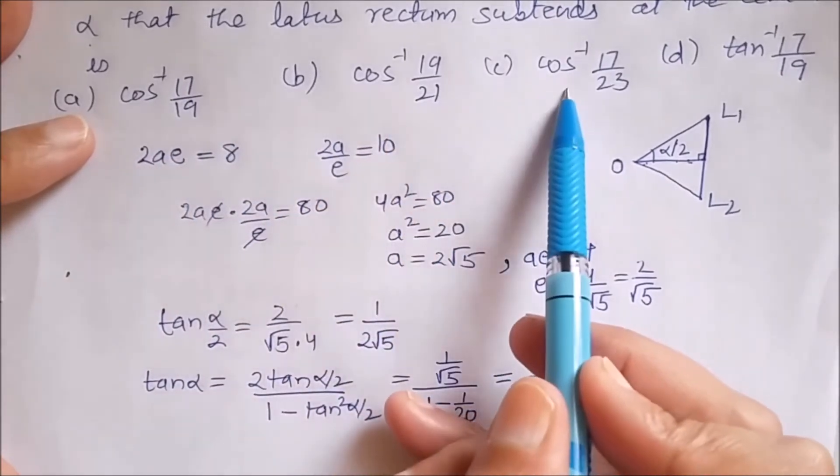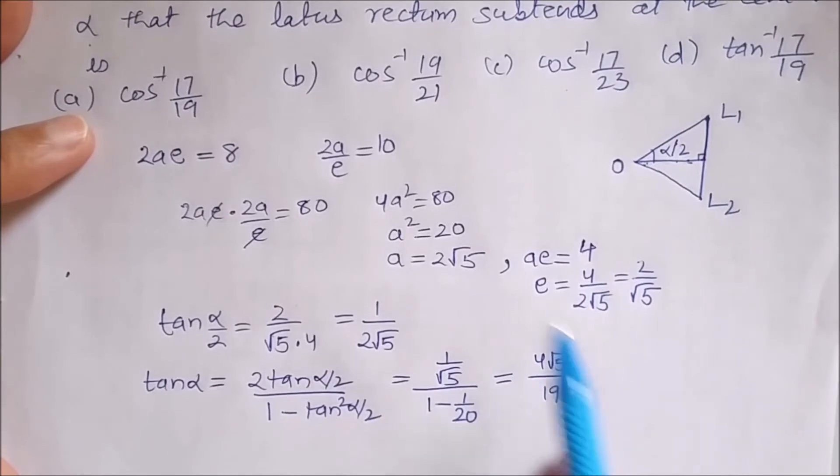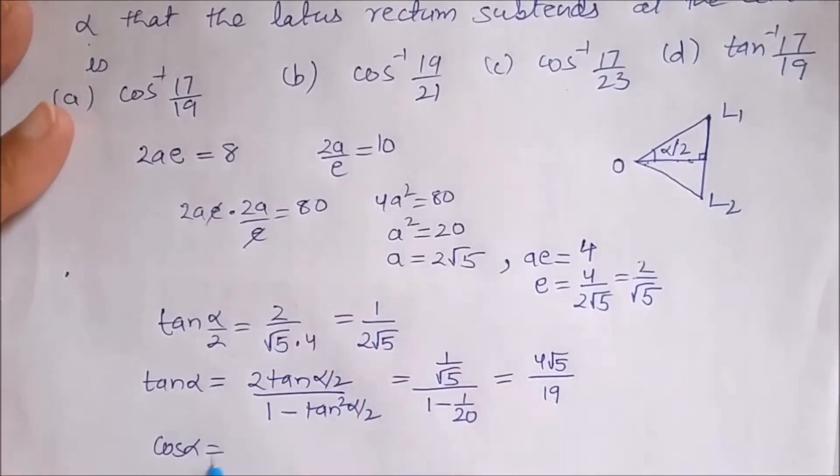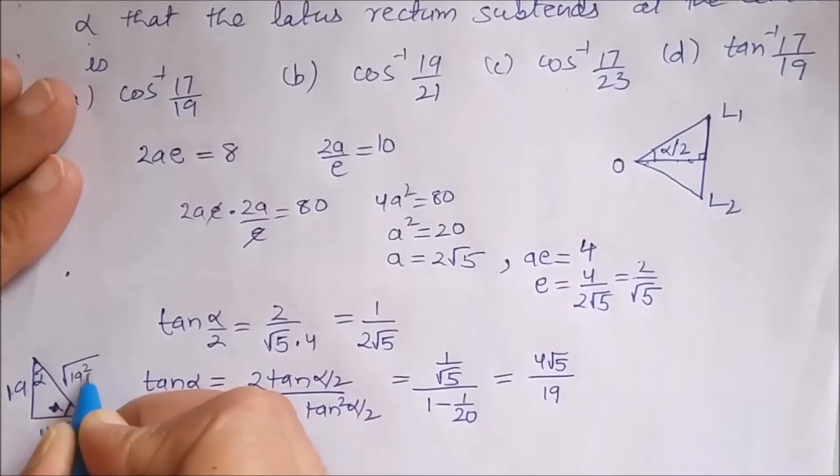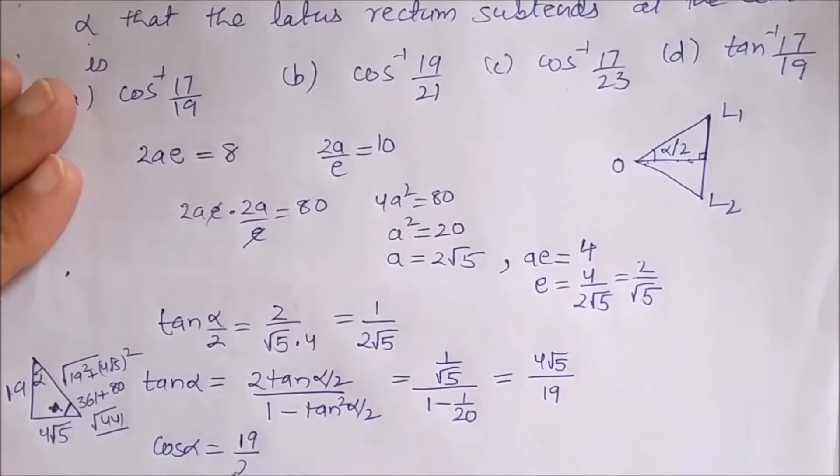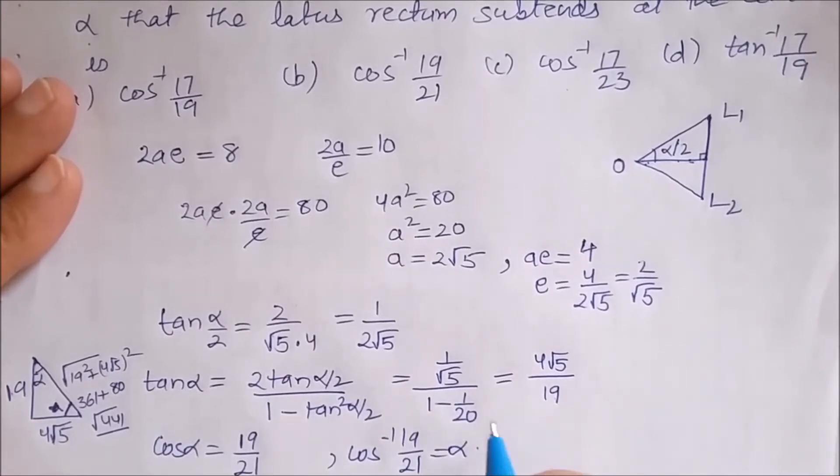This is cos inverse. This is cos inverse. This tan inverse is not matching with our answer. So let us convert this into cos inverse. From this triangle cos α will be, if we consider the right angle triangle like this and this distance is 19 and this is α. So this opposite side is 4√5. This one is 19 and this will be √(19² + (4√5)²). This gives me 361 and this will be 80. So this will be √441. So cos α will be 19/21. And cos⁻¹(19/21) will be our α, the required angle. Let us see one more.